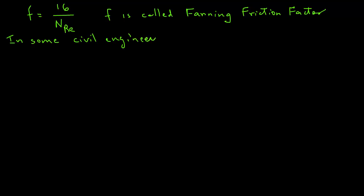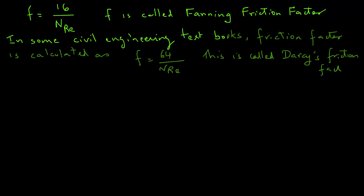Now in textbooks used in civil engineering, you may also find what is called Darcy's friction factor. Darcy's friction factor is 4 times the fanning friction factor. So if you were writing Darcy's friction factor F Darcy equals 64 divided by Reynolds number.